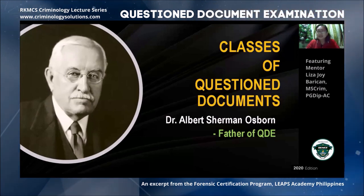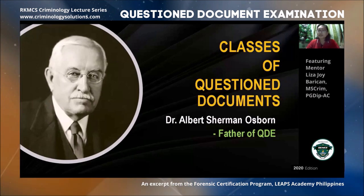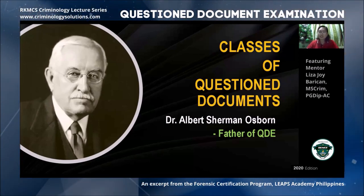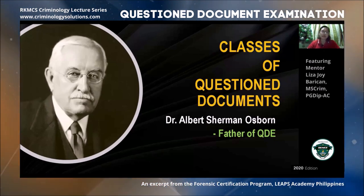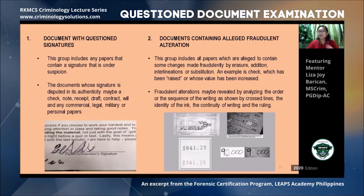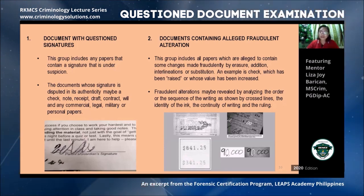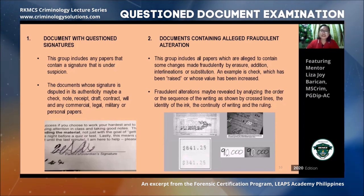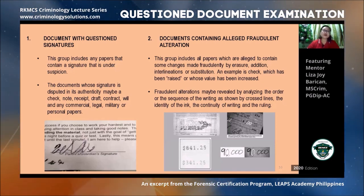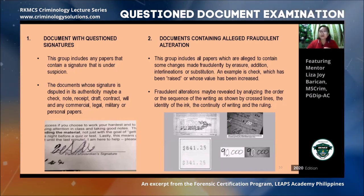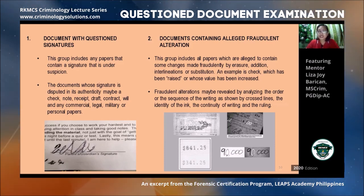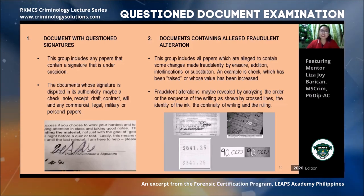Next, let's talk about the classes of questioned documents as given by Dr. Albert Sherman Osborne, considered the father of questioned document examination. There are eight classes of questioned documents commonly encountered by document examiners. The first is documents with questioned signatures — these are documents where the signature itself is being contested. For example, an excuse letter given to a teacher where the teacher doubts the signature because it may be forged and not actually the parent's or guardian's.